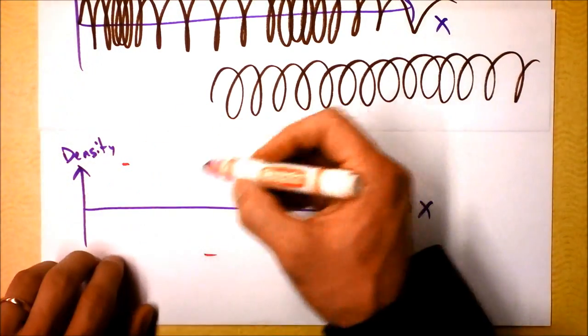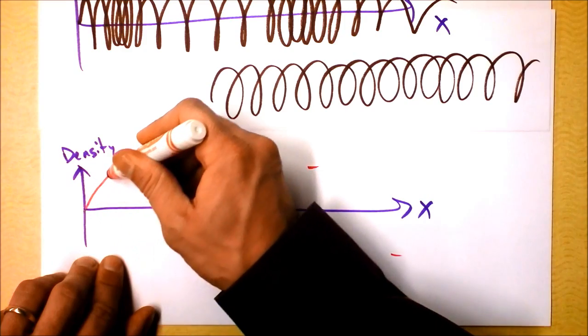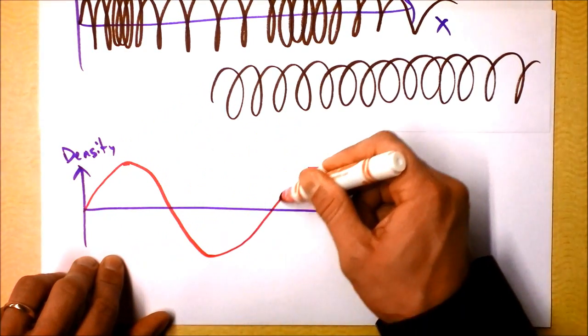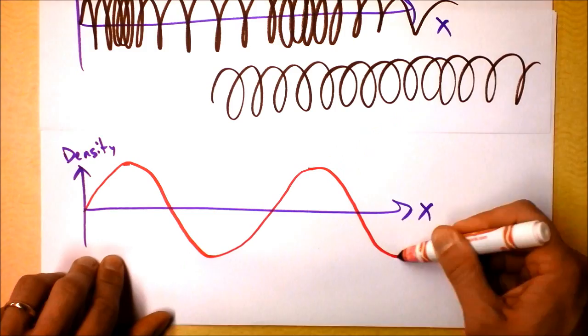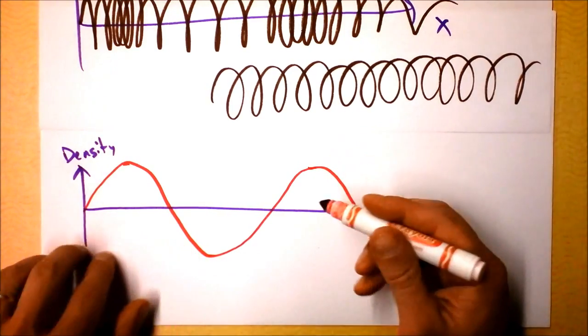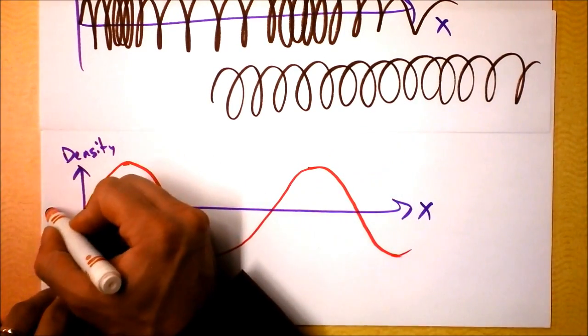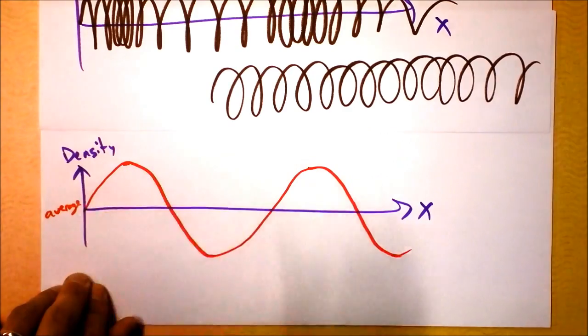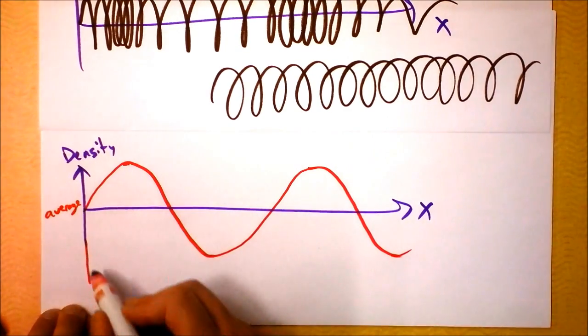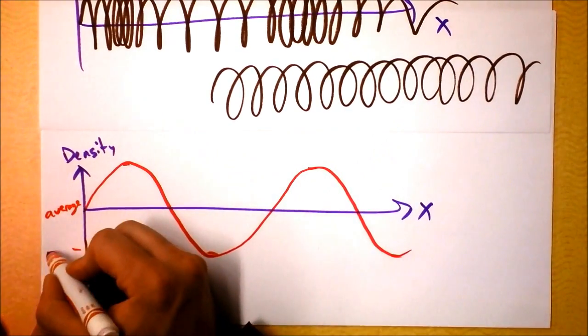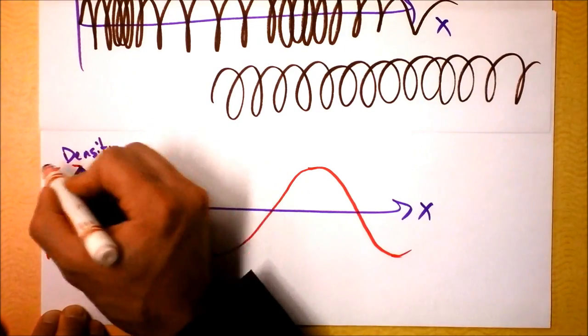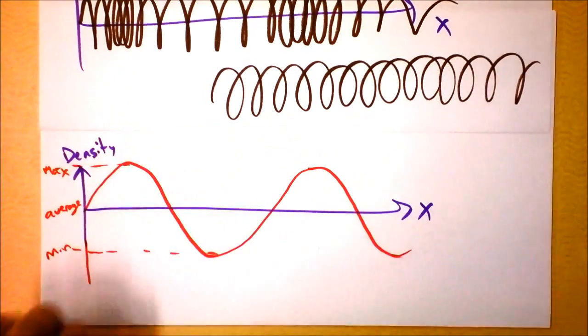So I don't mean that the density is actually zero when I'm at my axis. I mean that the density is average, average density. And here I'm talking about minimum density, and here I'm talking about maximum density.